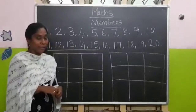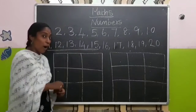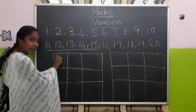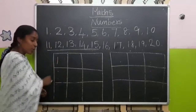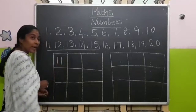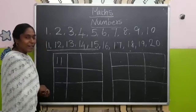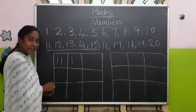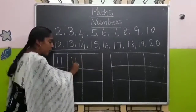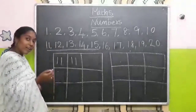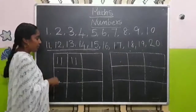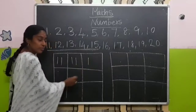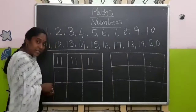To write number 11, you have to put 1 and another 1. It makes number 11. One more time: 1, 1 — it makes number 11.